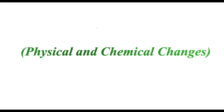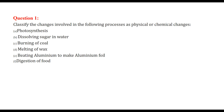Physical and chemical changes - we are going to take question and answer on this. First, classify the changes involved in the following processes as physical or chemical. Understand that when the composition changes, then only it is a chemical change. When only the form is changed and it can be brought back into the previous form, then it is physical. So if a change is irreversible it is chemical; if it is reversible it is physical.